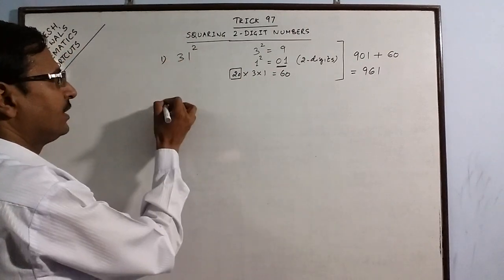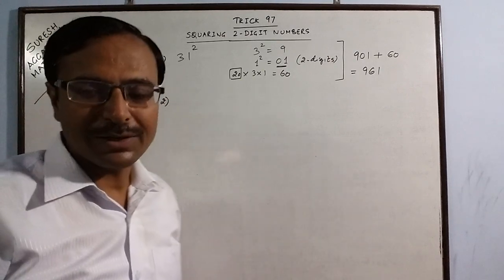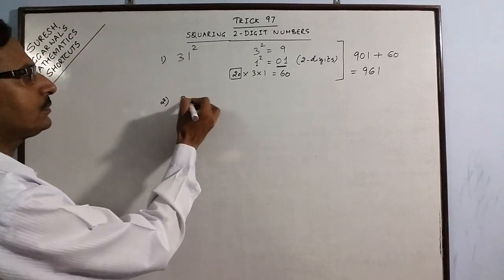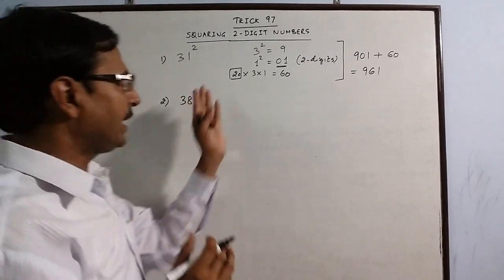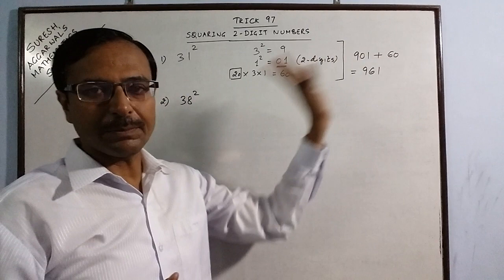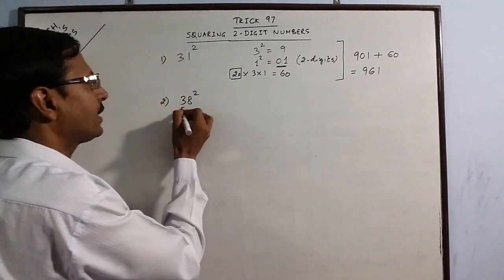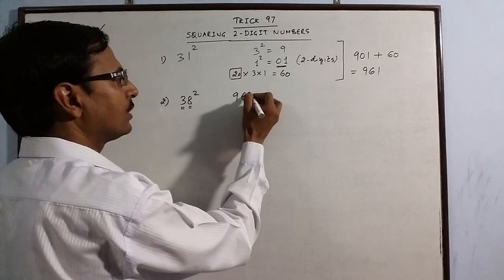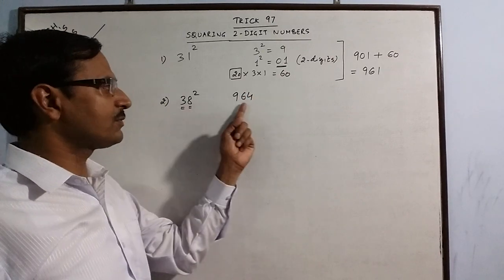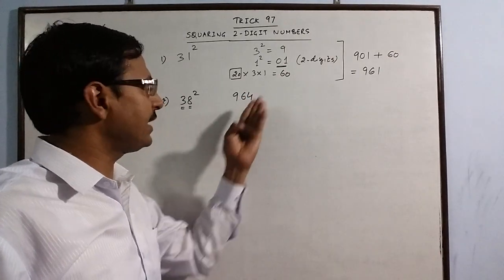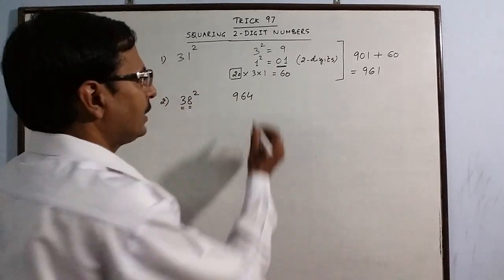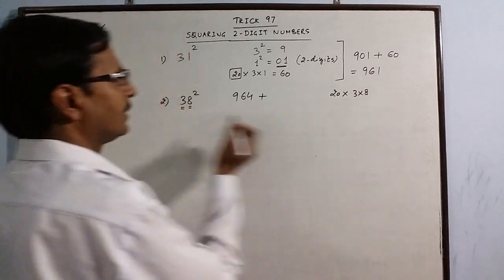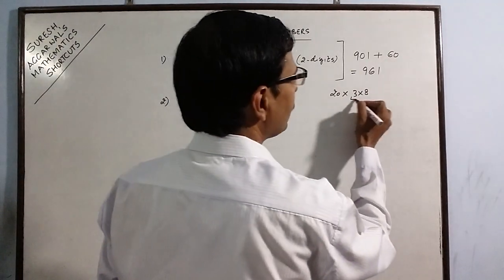Now let us take one more number. Say we have 38. This time I am getting rid of these steps, I will write directly. So 3 square is 9, 8 square is 64 - obviously 8 square is 64, two digits, so we need not write a zero before that. Then add 20 times the product of the digits, 3 into 8.